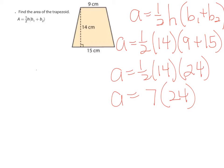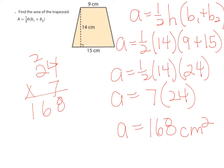So I don't know what that is. 24 times 7, 7 times 4 is 28, carry the 2, 7 times 2 is 14, plus 2 is 16. So the area equals 168 centimeters squared. Remember, area is always going to be squared.